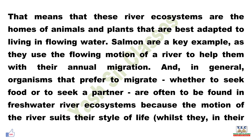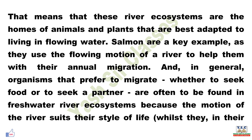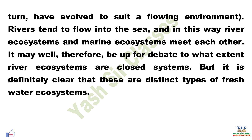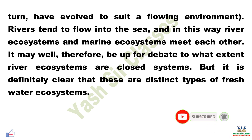In general, organisms that prefer to migrate, whether to seek food or to seek a partner, are often found in freshwater river ecosystems, because the motion of the river suits their style of life, and they in turn have evolved to suit a flowing environment. Rivers tend to flow into the sea, and in this way river ecosystems and marine ecosystems meet each other. It is clear that rivers are distinct types of freshwater ecosystem.